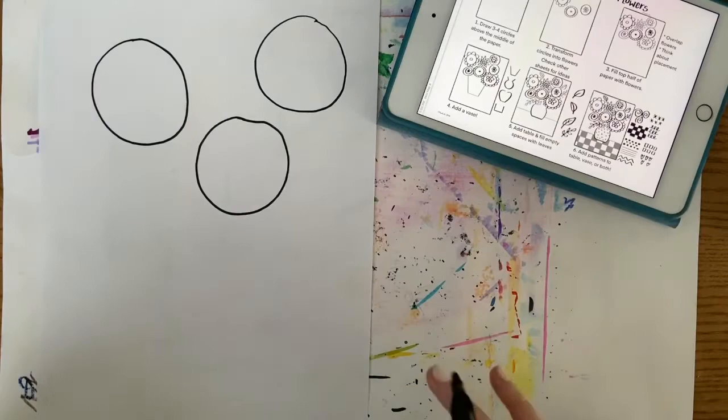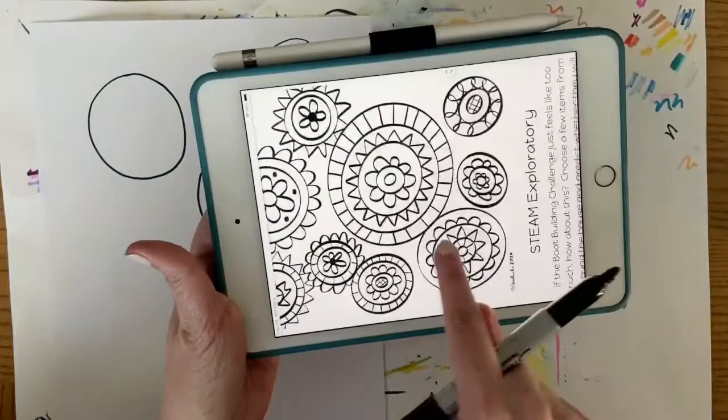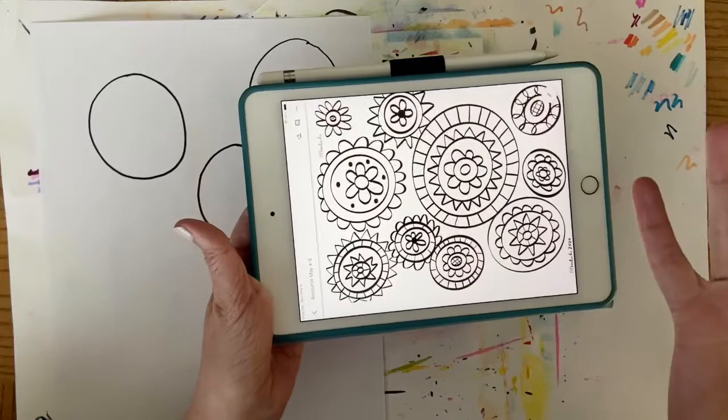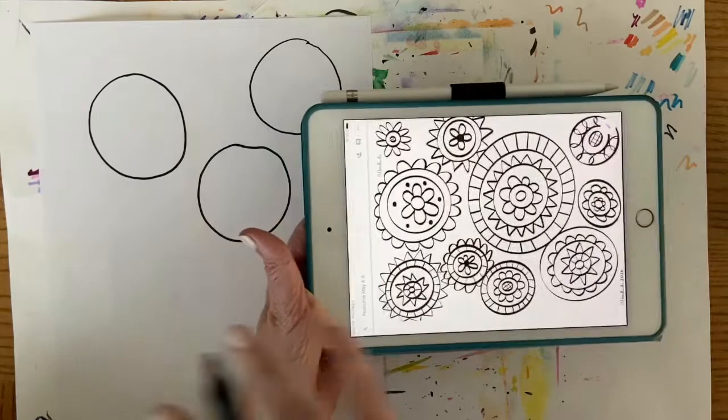So now that I have all three, I'm going to transform those circles into flowers. If you have the handout sheet, you can go to the back and see some examples of designs you can do inside of your flower or create your own. So I'm going to go ahead and do that.